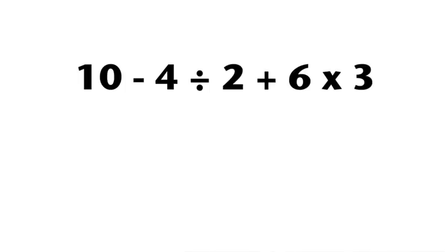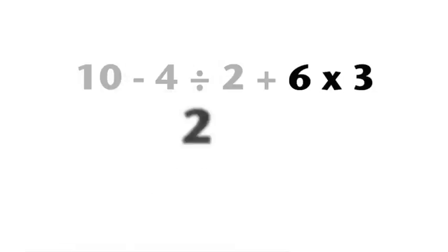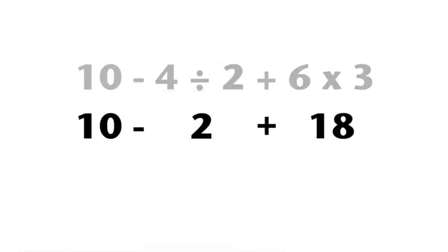Let's try another one. Ten minus four divided by two plus six times three. Work quietly with your neighbor and figure out the answer. Okay, let's see if you used order of operations correctly. If you divided and multiplied first, then subtracted and added, your final answer should be twenty-six.